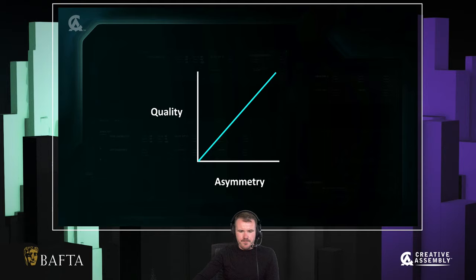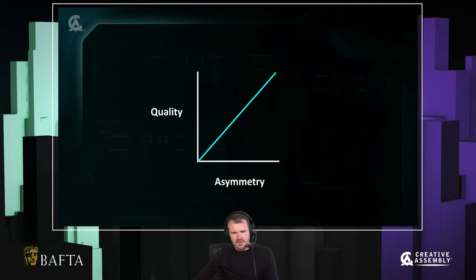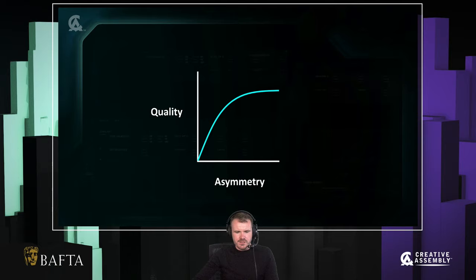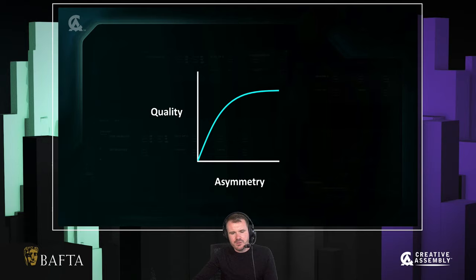In another example, as asymmetry increases, so does quality, with an obvious linear relationship. This is desirable, except — if you think about it — it's not very likely. The situation where you keep adding systems, characters, weapons, and mechanics and the game just linearly gets better doesn't seem realistic. At some point your game is going to get unwieldy and overcomplicated. A more realistic example is that initially, as asymmetry increases, so does quality, but there are diminishing returns — at some point it starts to level off, and we're putting resources into adding systems that aren't really doing anything for our game.